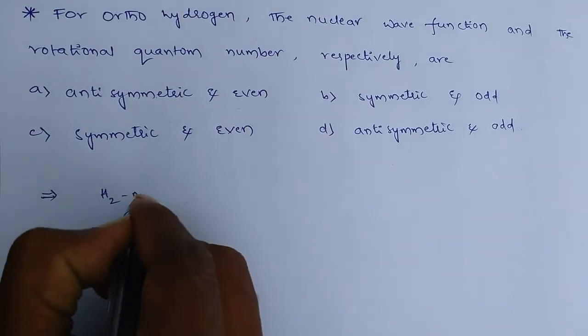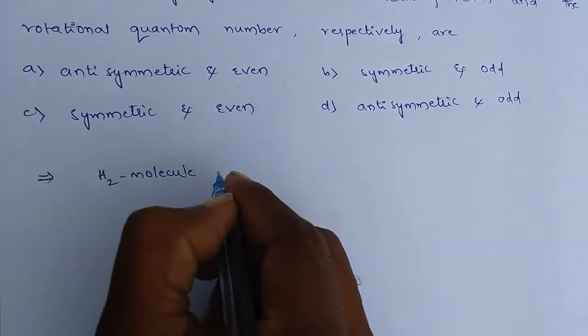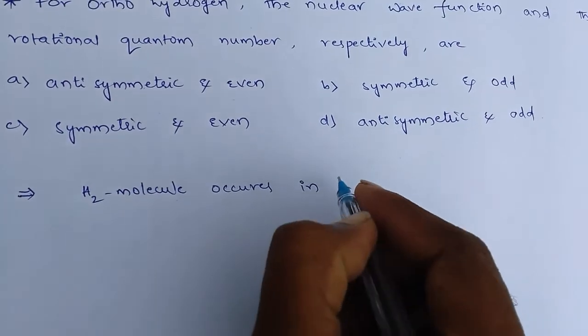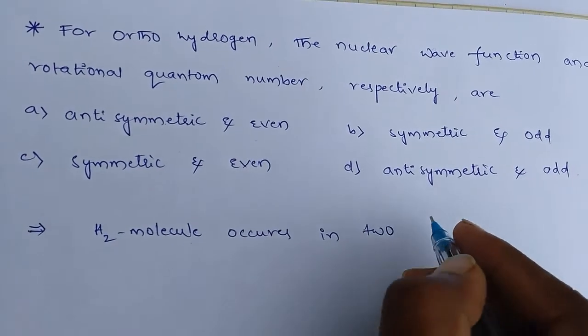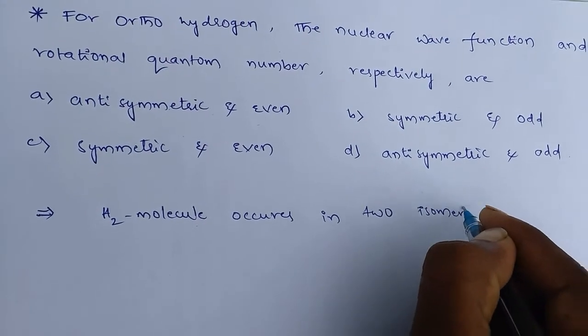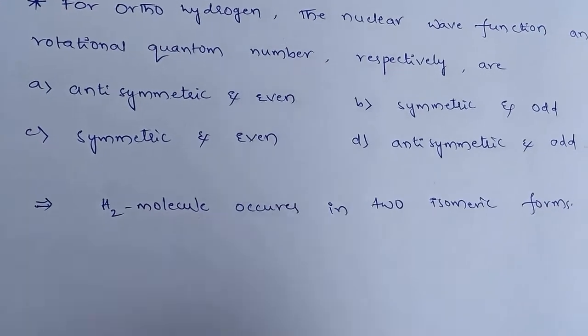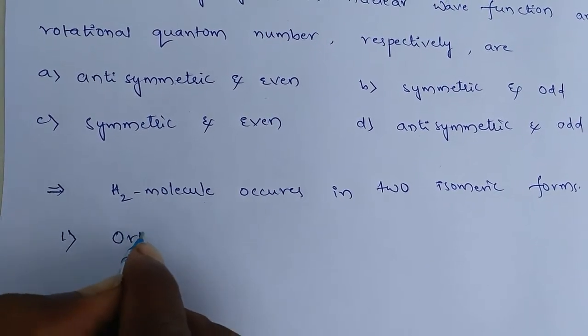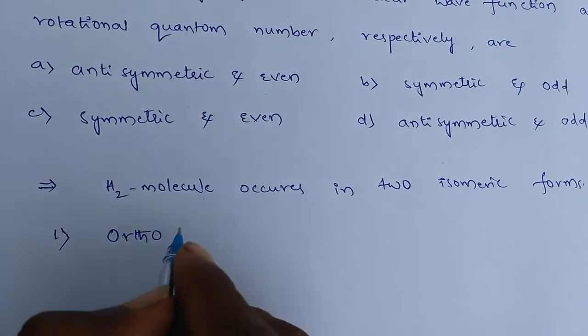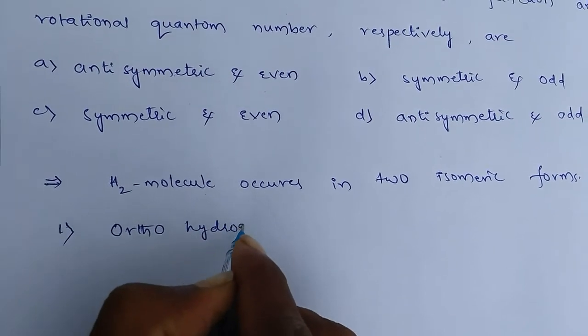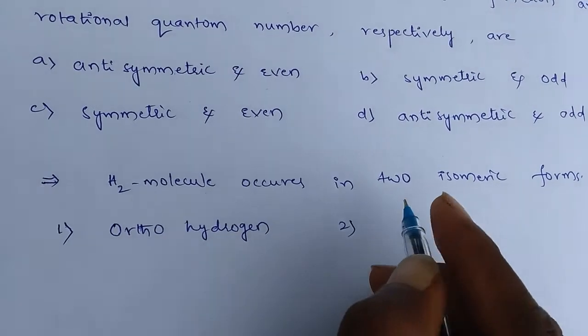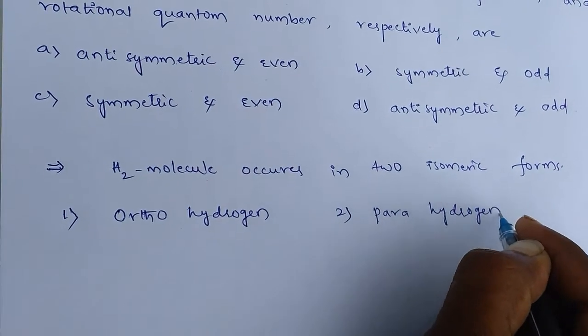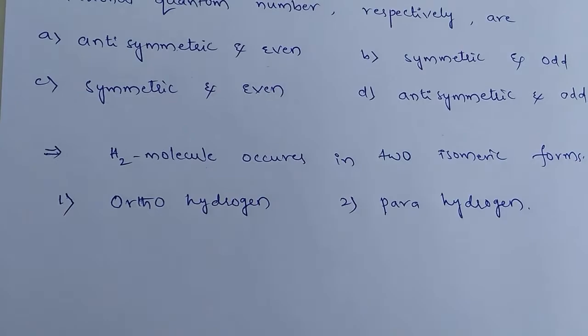So first thing: hydrogen molecule occurs in two isomeric forms. In that, one is ortho-hydrogen and another one is para-hydrogen.